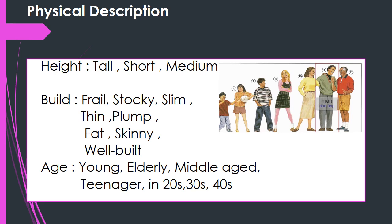The next point is body build — how a person looks. The first word is 'stocky': not weak, not tall, but short and a little bit fat. 'Slim' and 'thin' are similar words, but thin is more thin than slim. 'Plump' means pleasantly fat, looking good. 'Fat' you know. 'Skinny' is a person who looks unhealthy because their bones are visible. 'Well-built' means the body is developed through exercise, like a wrestler.